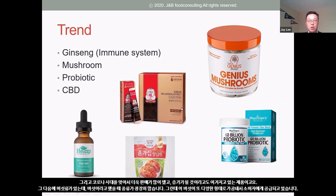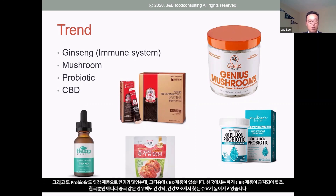Mushroom products — various kinds of mushrooms processed into capsules or powder form — are a hot item. CBD (cannabidiol) is also a hot topic, though some U.S. states still prohibit it. Probiotics are another trend as people look for healthy digestion products, consuming probiotic dietary supplements in capsule or powder form.